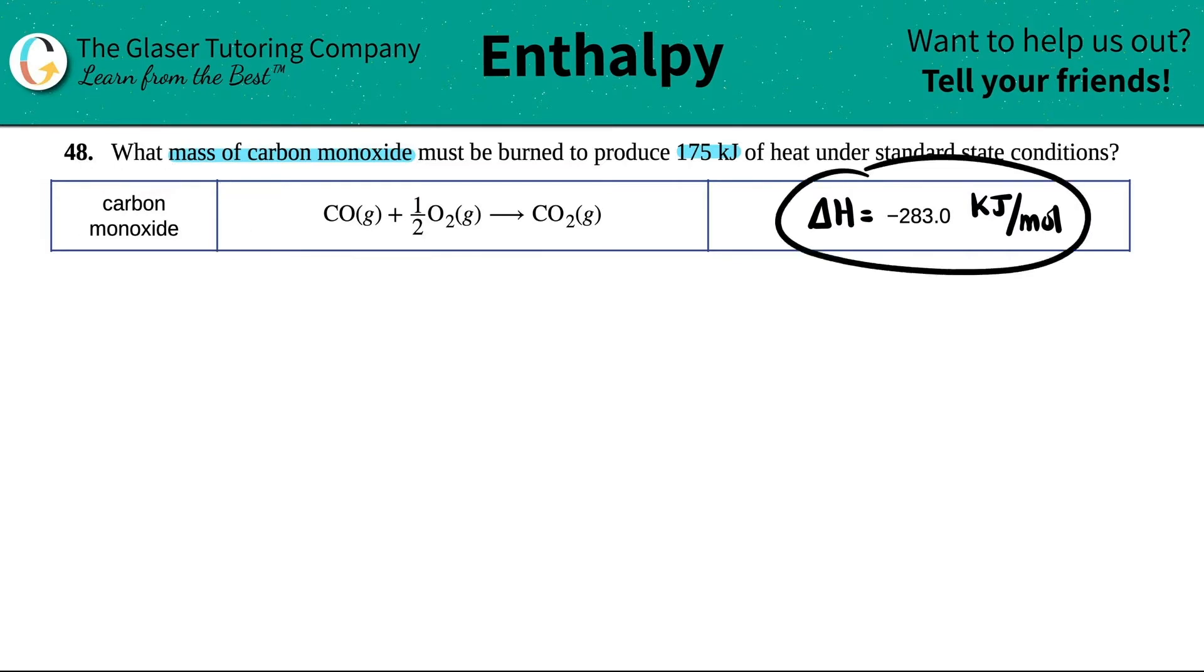So in this case, my delta H is a negative 283 kilojoules per mole. If I just wrote this out as an algebraic sentence with an equal sign, I would say that for every one mole of carbon monoxide, and carbon monoxide is represented by CO. So for every one mole of carbon monoxide that's burned,